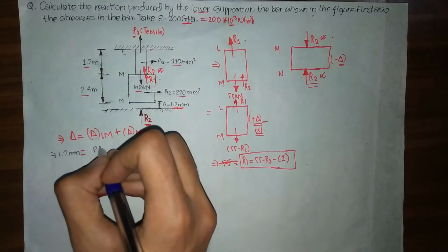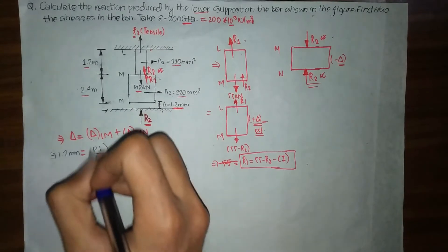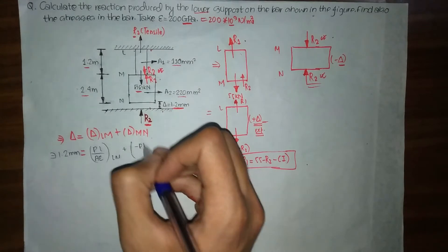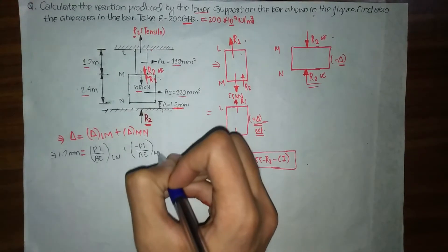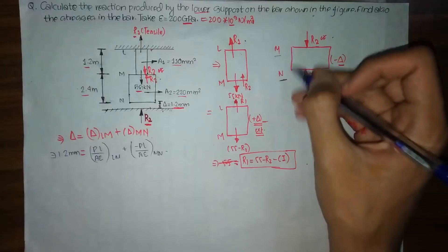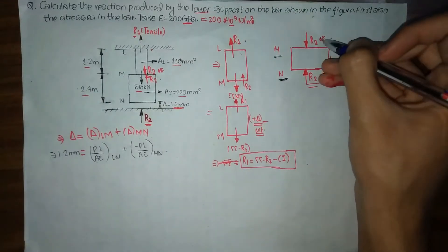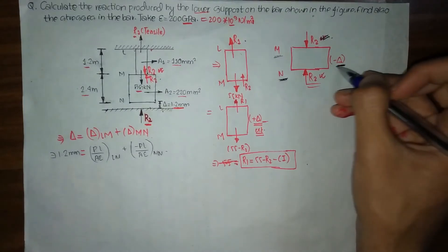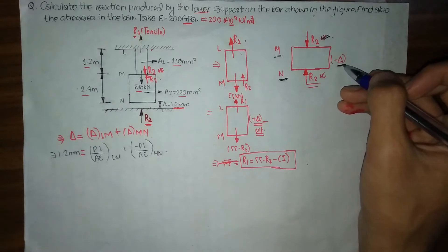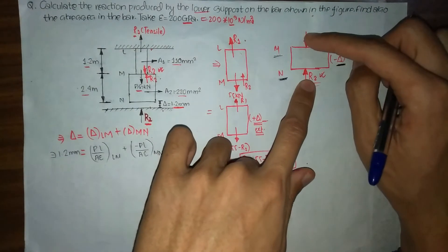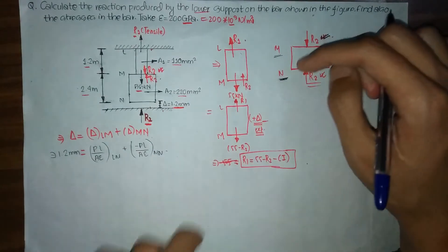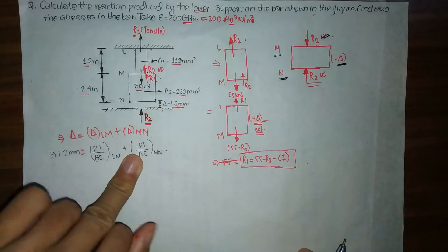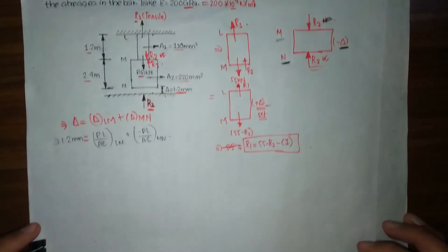Our formula for total delta is: delta = PL/AE for the LM portion, minus PL/AE for the MN portion. The minus sign is because for the MN section we have a compressive reaction force, meaning the deflection is negative — the bar is being compressed. For the LM portion the reaction is tensile, pulling apart, so we have positive extension.